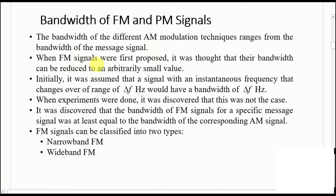When FM was first proposed, it was thought that the bandwidth could be reduced to an arbitrarily small value. The frequency deviation, delta f, was initially thought to be the only bandwidth required to send a message signal, but this was later proved to be wrong. It was discovered experimentally and mathematically that the bandwidth of FM signals — even narrowband FM — is at least equal to the bandwidth of the corresponding AM signal.